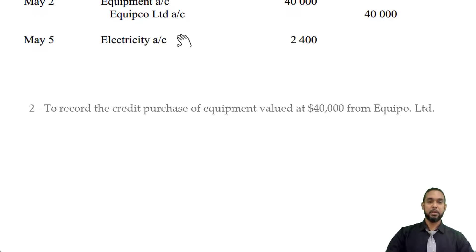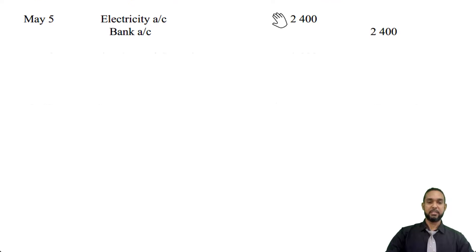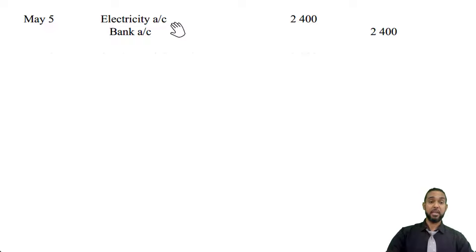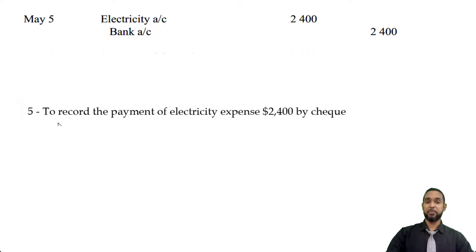Next transaction: a debit to electricity for $2,400 and a credit to bank for $2,400. Electricity is an expense — you debit an expense when you pay it. Bank is an asset, and crediting it means it's decreasing, because we are paying electricity by check. The narration is: to record the payment of electricity expense, $2,400, by check.